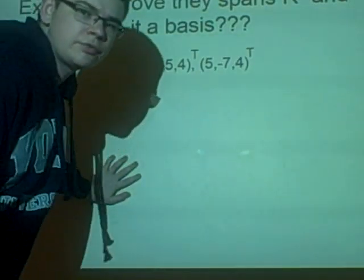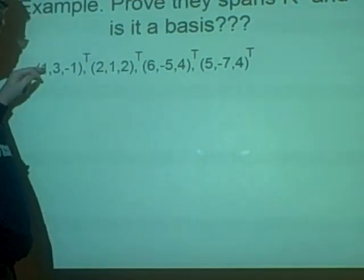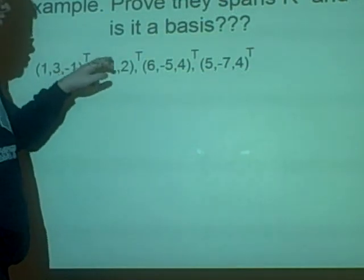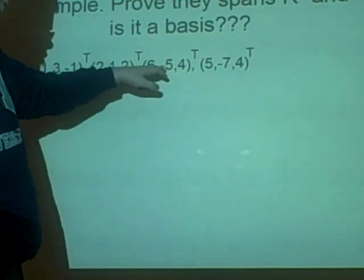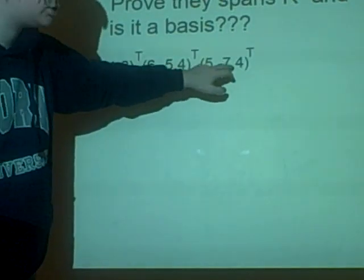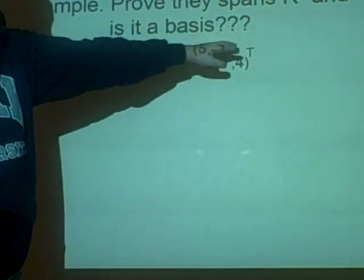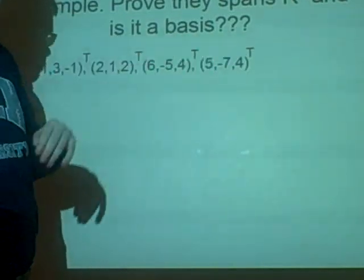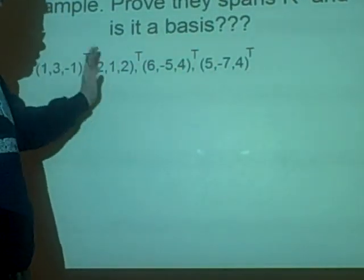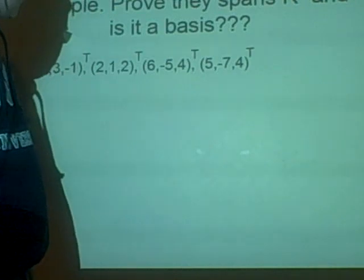So, we have our vectors here. 1, 3, minus 1, 2, 1, 2, 6, minus 5, 4, and 5, minus 7, 4. And then we transpose all these. That's what the T means. So we transpose them. It just saves space, otherwise we have to write them all down like that.